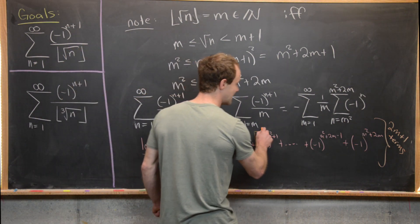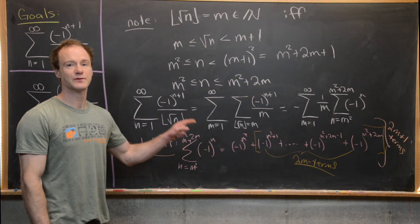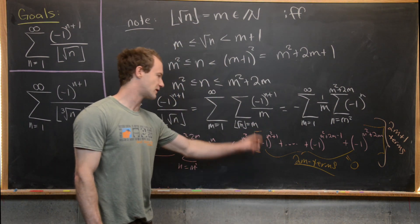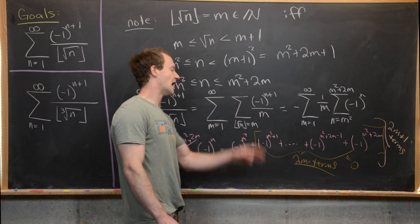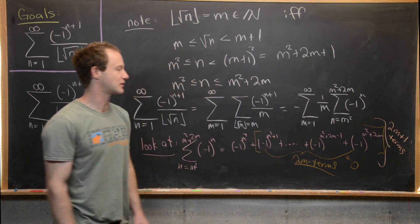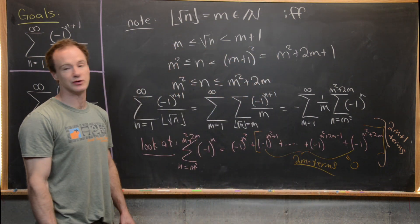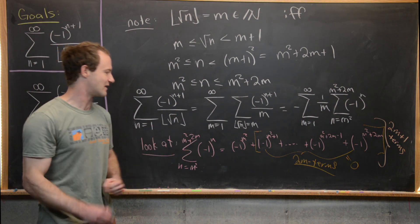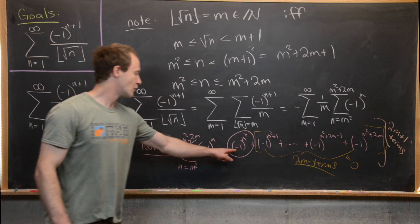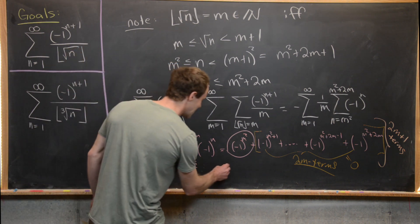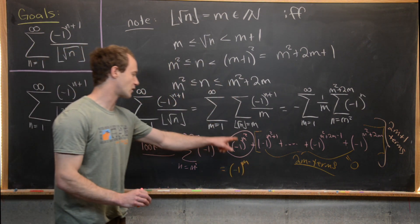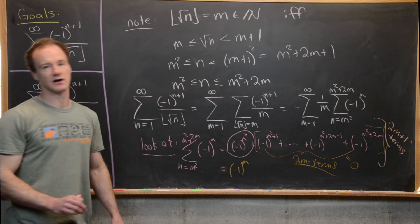We group the last 2m terms. If we take an even sum of numbers alternating between negative 1 and positive 1, they always cancel. So minus 1 to the m squared plus 1 cancels with minus 1 to the m squared plus 2, and so on, all the way up to minus 1 to the m squared plus 2m minus 1 canceling with minus 1 to the m squared plus 2m. Every term is canceled because there are an even number of them. So the inner sum just equals minus 1 to the m squared, which equals minus 1 to the m, since m squared and m always have the same parity.